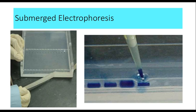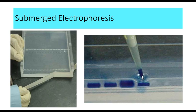Another technique is submerged electrophoresis. In this agarose gel electrophoresis setup, the agarose gel is formed with wells. The sample is loaded into these wells, and the electrophoresis chamber is filled with buffer so that the gel is completely submerged in buffer. The current is then applied and the sample runs through the gel. This submerged type of electrophoresis is used for DNA electrophoresis.